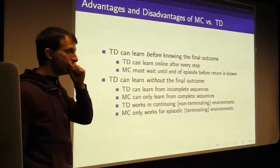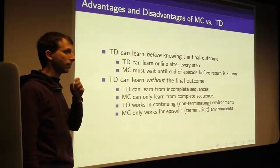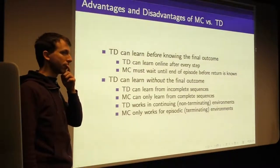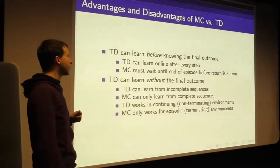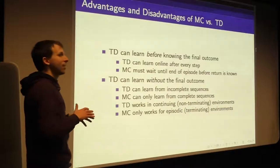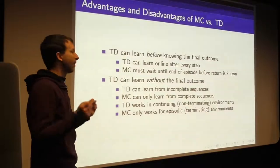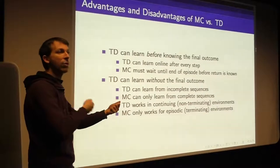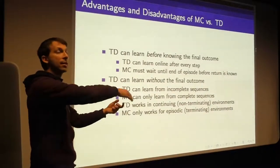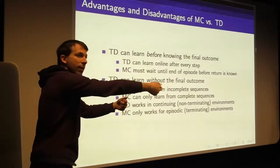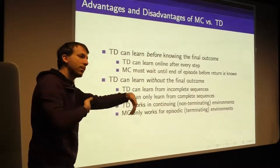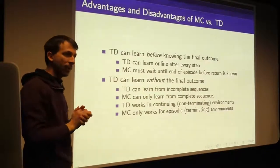Does TD learn the same answer as Monte Carlo? Student question about whether near-crash behavior is learned. The basic answer is yes — TD finds the true value function. Even though you correct based on your guess rather than the actual outcome, that guess gets updated toward subsequent experience, which grounds it more and more. All guesses progressively improve and the information backs up such that you converge to the correct value function.